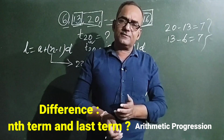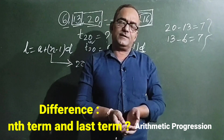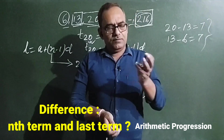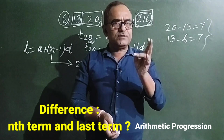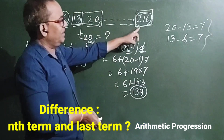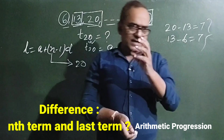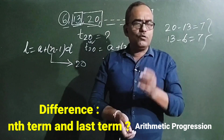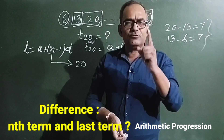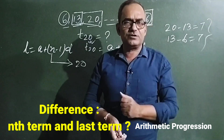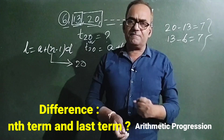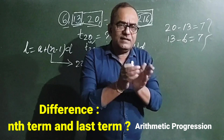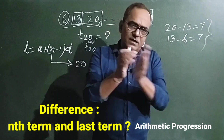So this is the difference between the nth term and the last term of an arithmetic progression. If you have to find the last term, you must have been given the first term, how many terms are there between the first term and the given last term, and the common difference. If you have to find the nth term, you just need the first term, the common difference, and that particular term number — such as the 20th, 25th, or 30th term. I am sure students now have no confusion about the difference between the nth term and the last term.